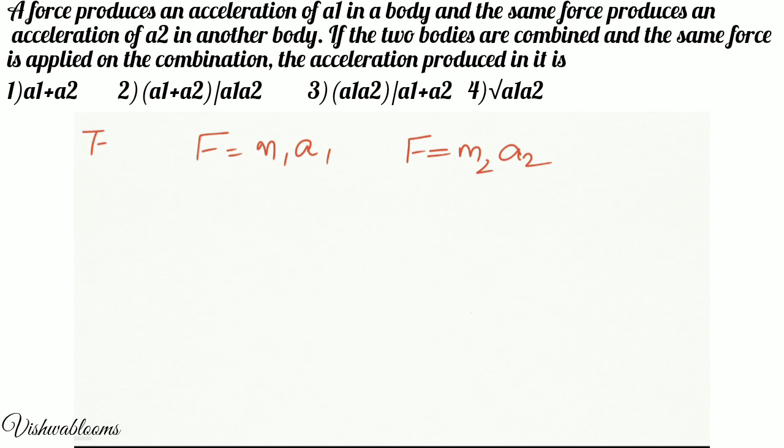Now on the combination of the bodies, that means both these masses are being added up. But before doing so, let us find out the masses. M1 is nothing but F by A1, and M2 is nothing but F by A2.